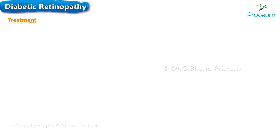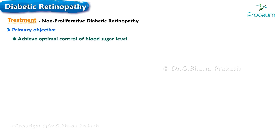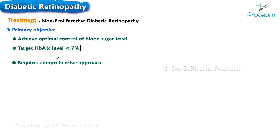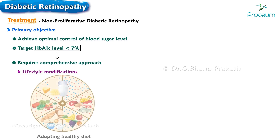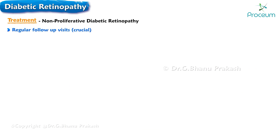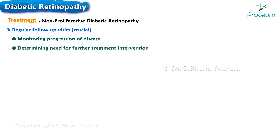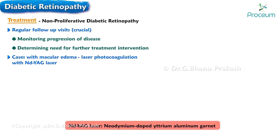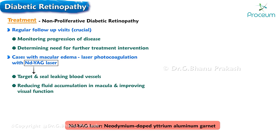Now let's move on to the treatment of diabetic retinopathy. For non-proliferative diabetic retinopathy, the primary objective is to achieve optimal control of blood sugar levels, with a target HbA1c level of less than 7%. This requires lifestyle modifications such as a healthy diet and regular physical activity, as well as appropriate medication management, which may involve oral medications or insulin therapy. In cases where macular edema is present, laser photocoagulation using a neodymium-doped yttrium-aluminum garnet laser can be performed to seal leaking blood vessels, reducing fluid accumulation and improving visual function.